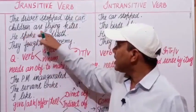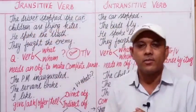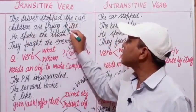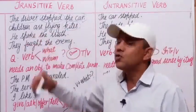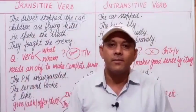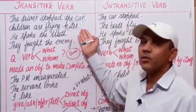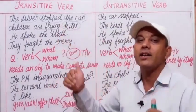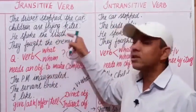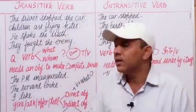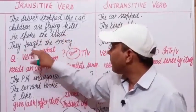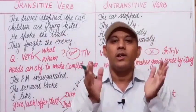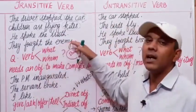'Children are flying kites.' Children is the subject, 'are flying' is the verb, and kites is the object. We need an object to complete the sense — 'children are flying' alone is incomplete. 'He spoke the truth' — spoke what? The truth. 'They fought the enemy' — whom did they fight? The enemy. All these sentences require an object to complete their meaning.